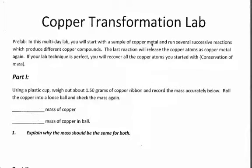In this multi-day lab, you will start with a sample of copper metal and run several successive reactions which produce different copper compounds. The last reaction will release the copper atoms as copper metal again. If your lab technique is perfect, you will recover all the copper atoms you started with. It's basically the law of conservation of mass. So we're going to perform four different chemical reactions resulting in four different copper compounds. Then, in the very last reaction, we're going to get the copper back out of it. By the law of conservation of mass, the amount of copper we start with should be the same as the amount we end with, provided that we do our lab calculations and procedures correctly.